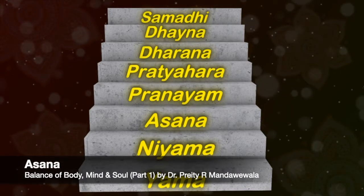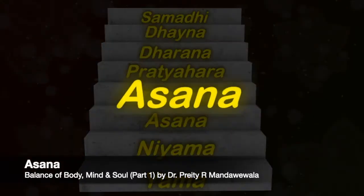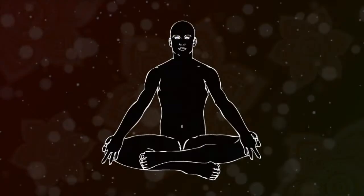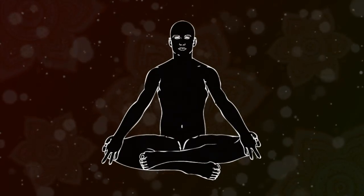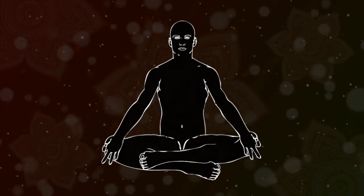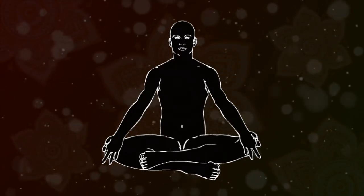The third step of Ashtangayoga is Asana or Postures. Asana is a body posture. It is a Sanskrit word used to describe a position of the body.